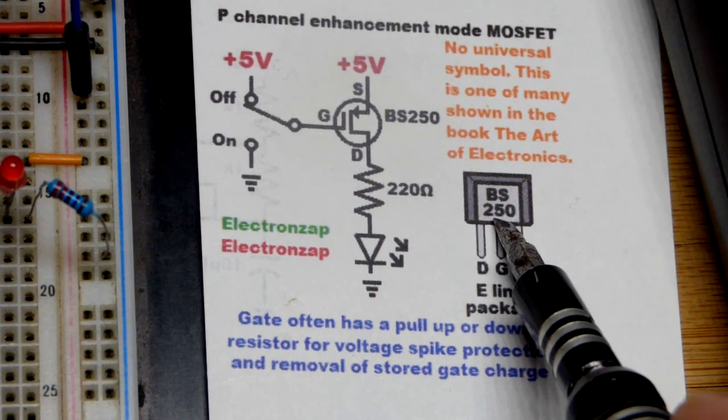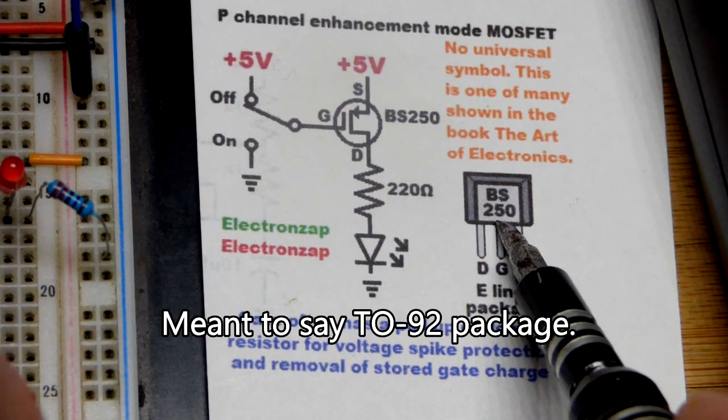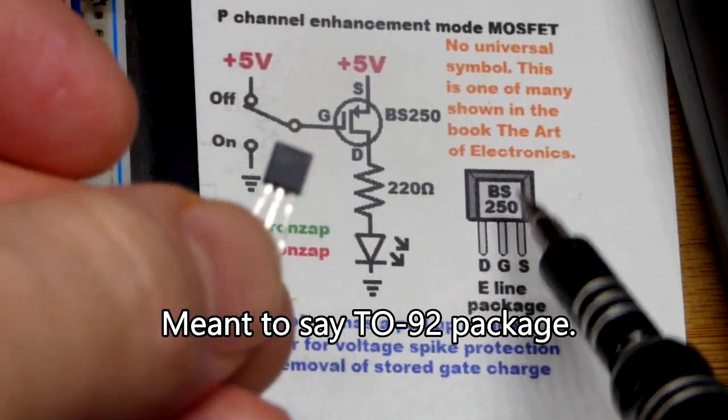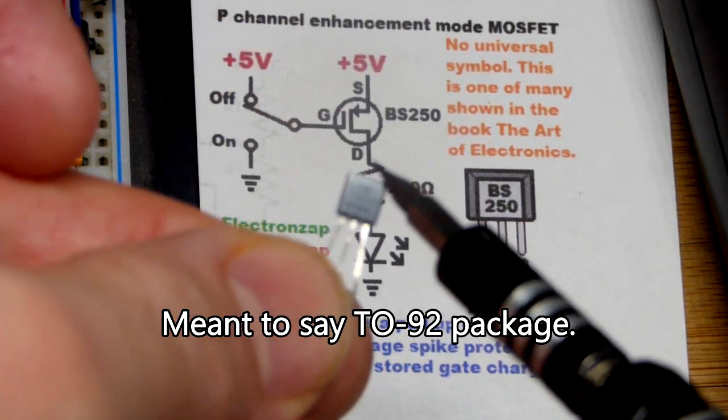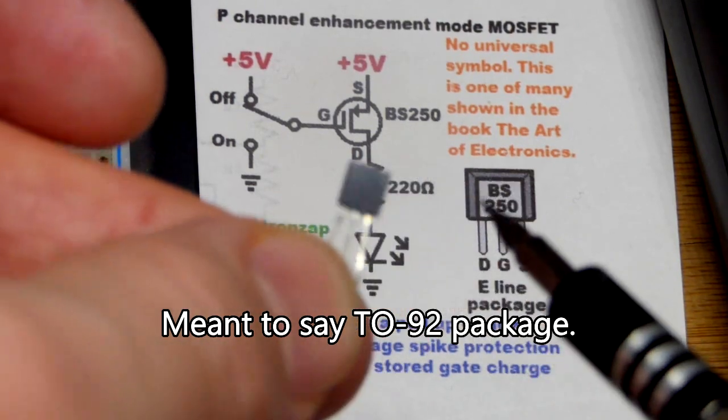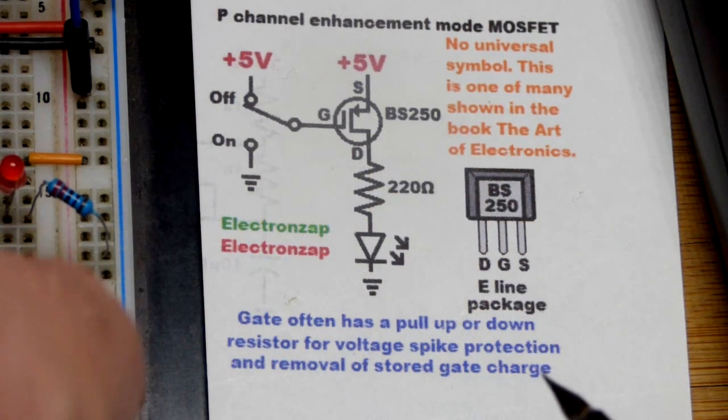That's in the E-line package. That's where I had to buy it. I think it's easy to buy it in the TO-92 package, which I think this is the one I used in the last video. Usually you can't read that on camera, but it's easy to read in person.